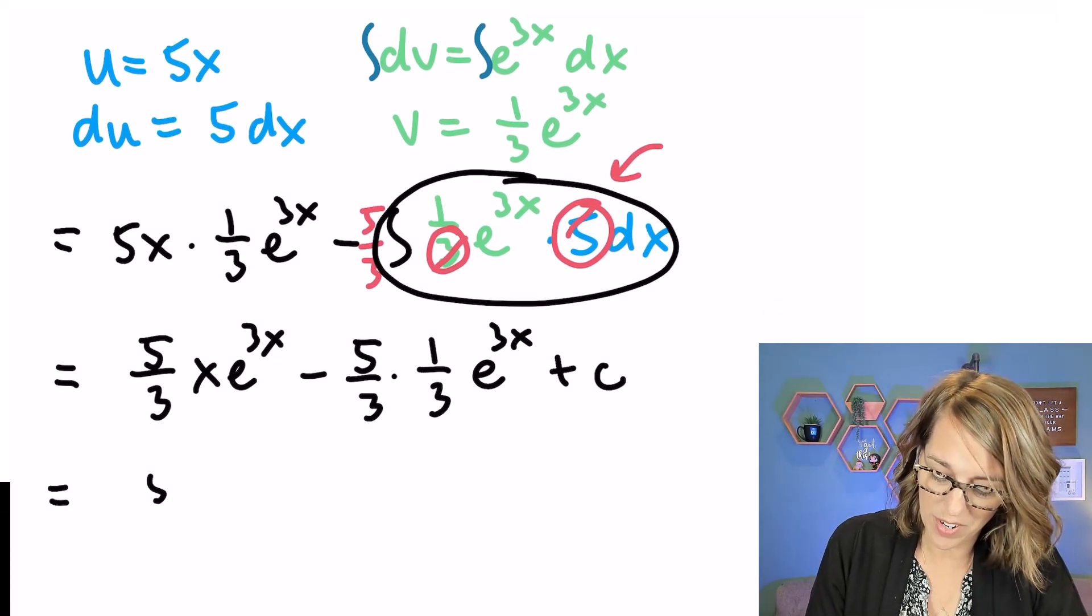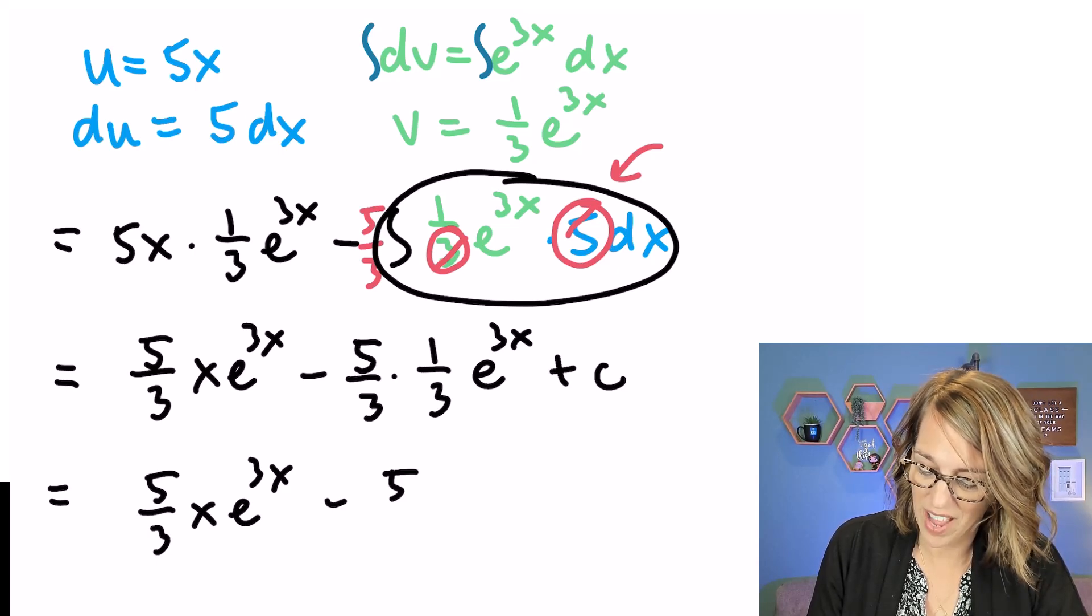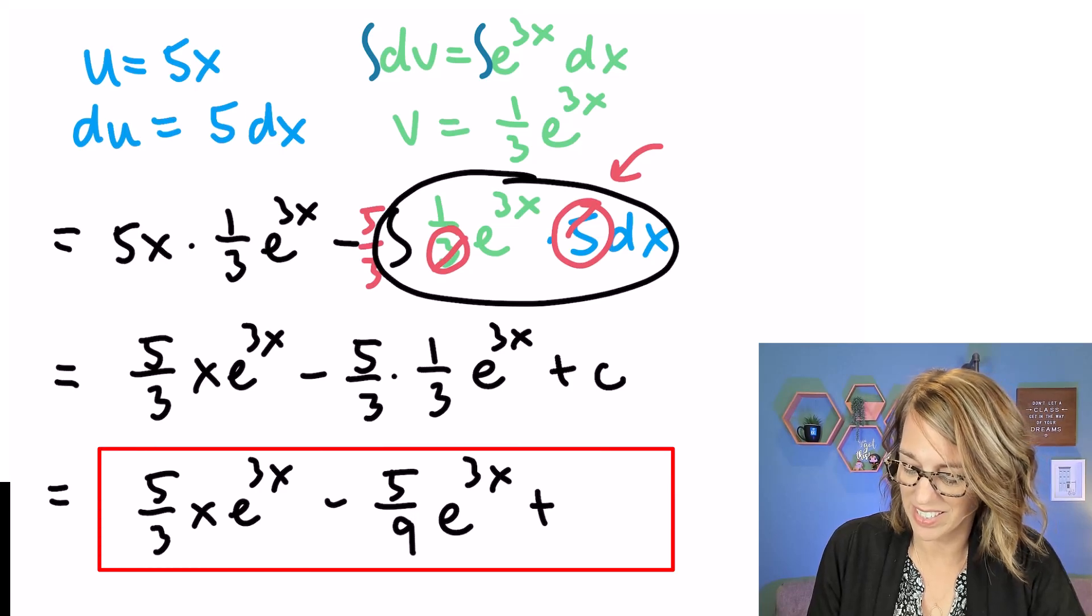Just one more thing that I can do, and that's to multiply those threes together. 5 ninths e to the 3x plus c.